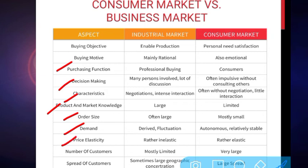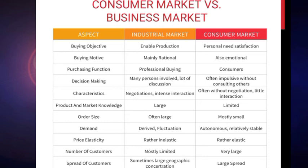The next aspect is price elasticity. In the industrial market, there is very little or almost no price elasticity, as their aim is to support production. Whereas in the consumer market, many products are highly price elastic, meaning price is one of the biggest concerns for those consumers. Then the number of customers — in the industrial market the number of customers is very limited, while in the consumer market the customer base is very large.